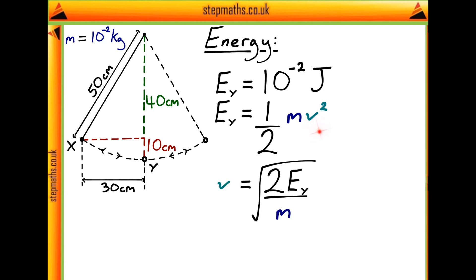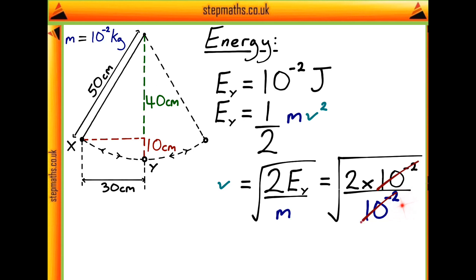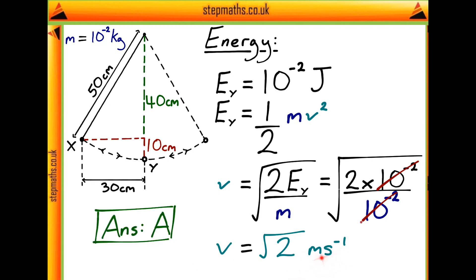So, rearranging for our velocity v, we get this expression here, and then substituting in our energy at y and our mass of 10 to the minus 2 kilograms, we get this. And then our 10 to the minus 2s are just going to cancel out, giving us that the velocity of our bob at y is just the square root of 2 metres per second. This is going to correspond to answer A given in our question.